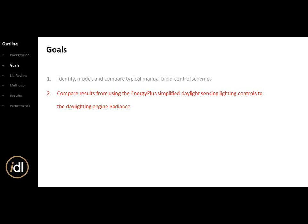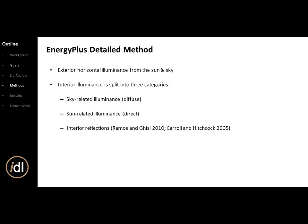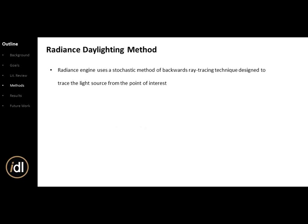Moving to Goal 2: comparing EnergyPlus's simplified method with Radiance. The EnergyPlus detail method takes exterior horizontal illumination from the sun and sky, and splits interior luminance into three categories: sky-related diffuse, sun-related direct, and interior reflections. The Radiance method uses a stochastic backwards ray tracing approach, tracing light from a point of interest — so you're not getting all the useless daylight hitting the ceiling or ground, just what affects your sensor. Geometry is obtained in SketchUp, and Radiance uses a continuously changing sky condition.